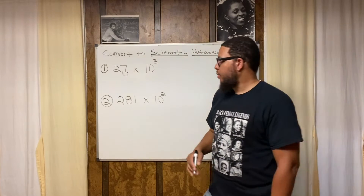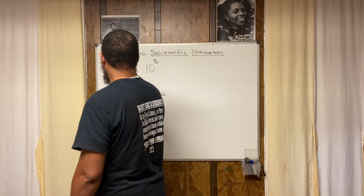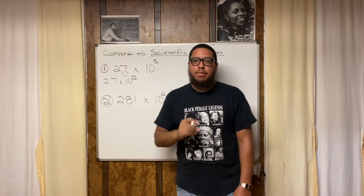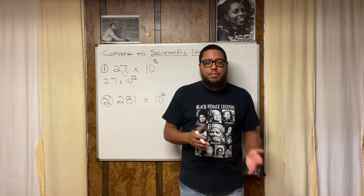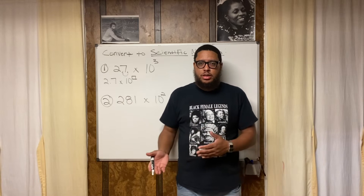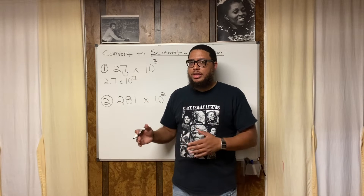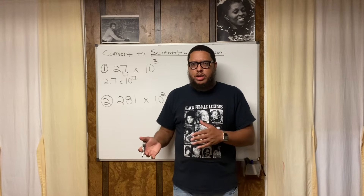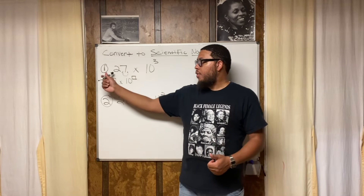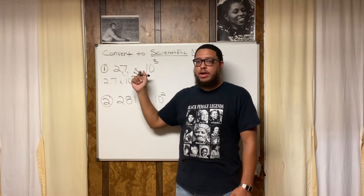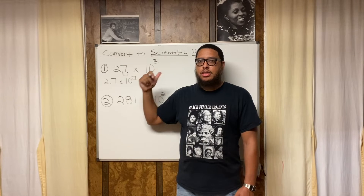So now scientific notation is going to be 2.7 times 10 to some exponent. Now ask yourself: how many spaces did I move the decimal point? I moved it one space. Now the question is, should the exponent be positive or negative — positive 1 or negative 1? The exponent equals the number of spaces we moved to create our number between 1 and 10. To determine the sign, I ask: what direction would I move to get back to the original number? I would move to the right.